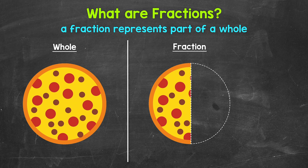We're going to start with this whole pizza right here. So we have one whole pizza. If we had two whole pizzas, we'd write two. If we had three pizzas, we'd write three. So on and so forth. The point being, we use whole numbers to represent wholes. So nothing new here.